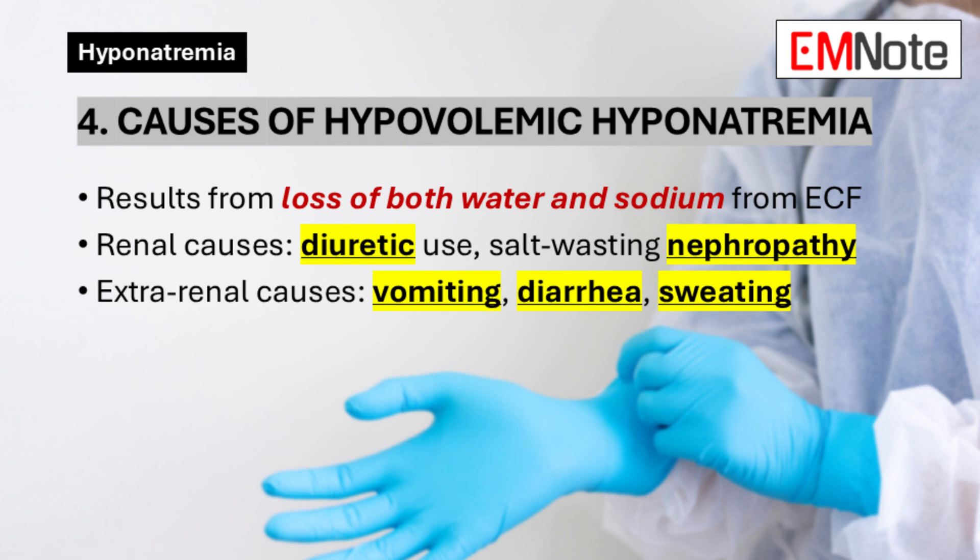Point 4: Causes of Hypovolemic Hyponatremia. Hypovolemic hyponatremia is caused by the loss of both water and sodium from the extracellular fluid. This can be due to renal causes like diuretic use or salt-wasting nephropathy, or extrarenal causes such as vomiting, diarrhea, or sweating.